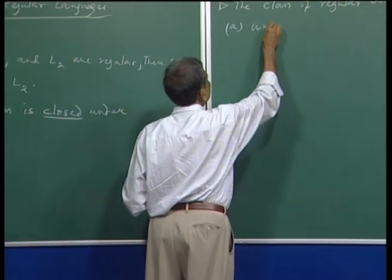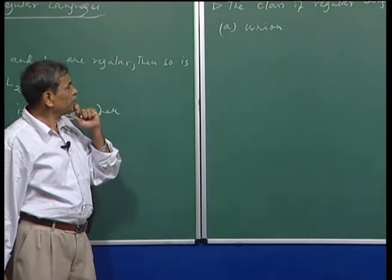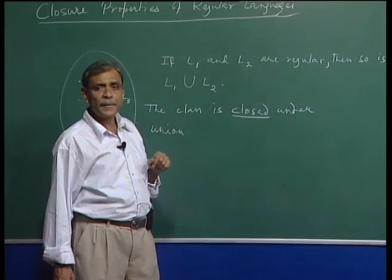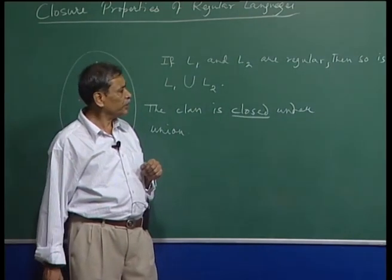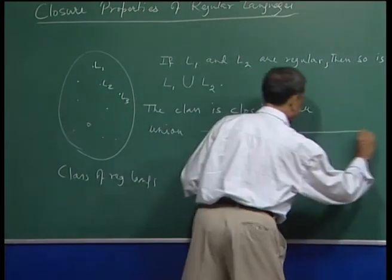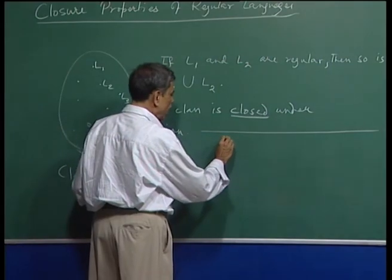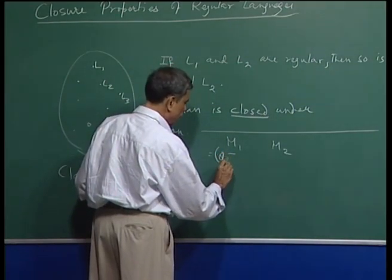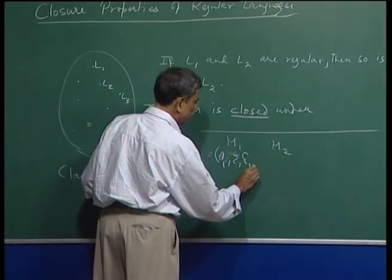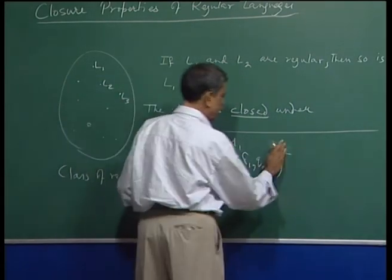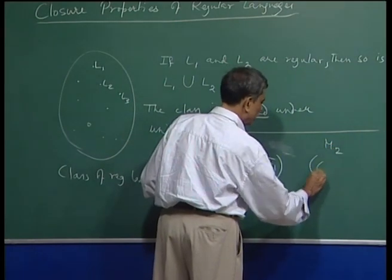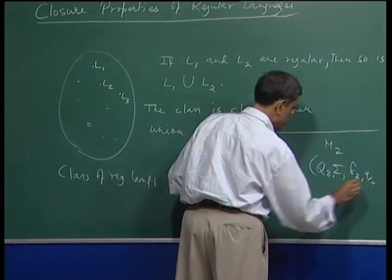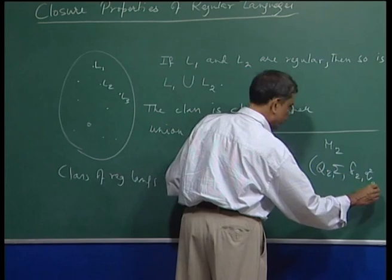The class of regular languages is closed under a number of operations — not a totally exhaustive list, but several. First is union. For the proof that the class of regular languages is closed under union, we have seen this earlier. Suppose I have two DFAs M1 and M2, where M1 = (Q1, Σ, δ1, q0, F1) and M2 = (Q2, Σ, δ2, q02, F2).